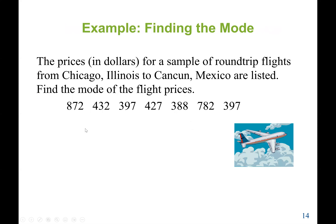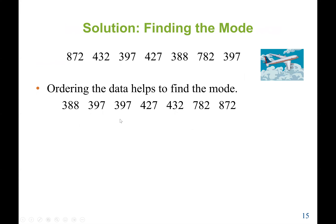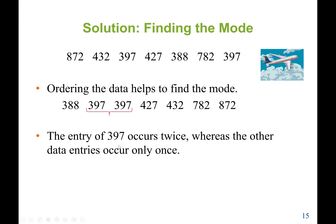Here we have flight prices: 872, 432, 397, 427, 388, 782, 397. The mode is 397 because 397 occurs twice, whereas the other entries occur only once. So the mode is 397.